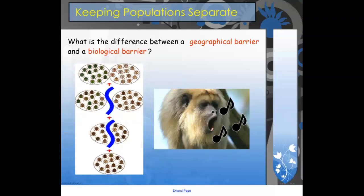Looking at the difference between barriers that can separate populations, which causes speciation, we can have geographical barriers. Geographical barriers would be things like mountains, rivers, or actually two different continents — an ocean separating two different continents. This physically prevents two populations from interbreeding by separating them by some sort of geographical landmark.